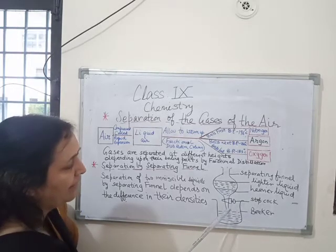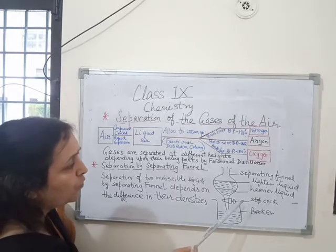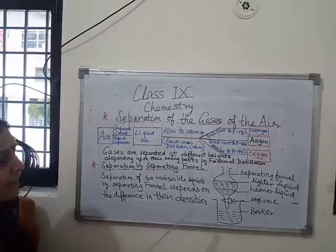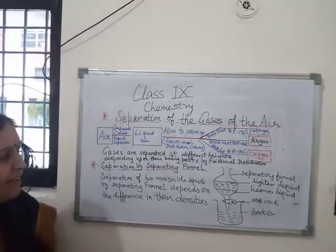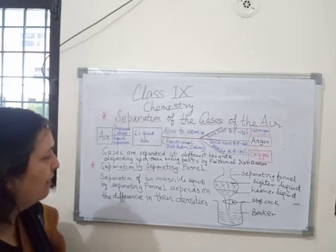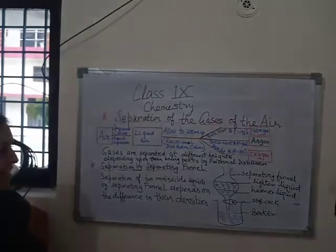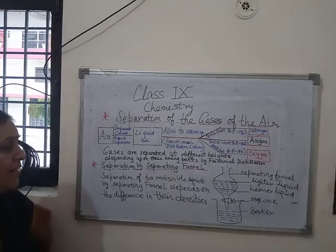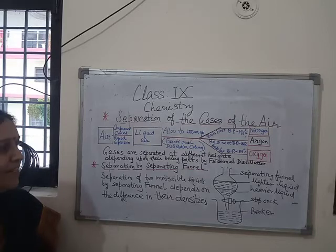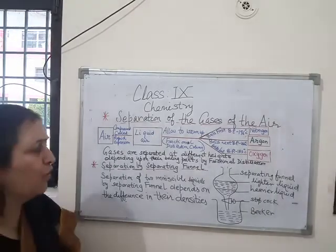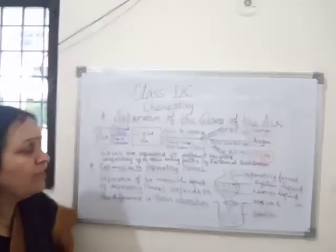The stopcock is then closed. After opening the stopcock again, the lighter liquid is collected in another beaker. In this way, the mixture of two immiscible liquids is separated using a separating funnel. This process is based on the difference in their densities. Examples of such mixtures include alcohol and water, kerosene and water, and oil and water.